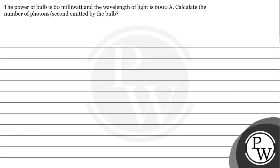Hello, let's solve this given question. The power of the bulb is 60 milliwatt and the wavelength of light is 6000 angstrom. We need to calculate the number of photons per second emitted by the bulb.